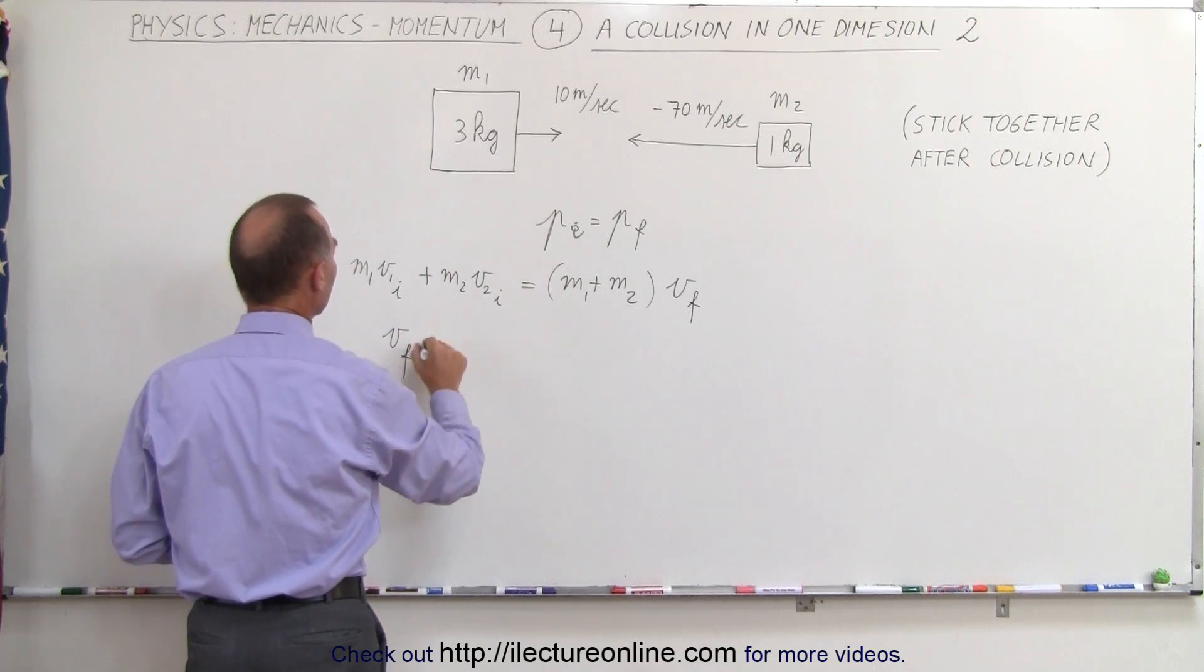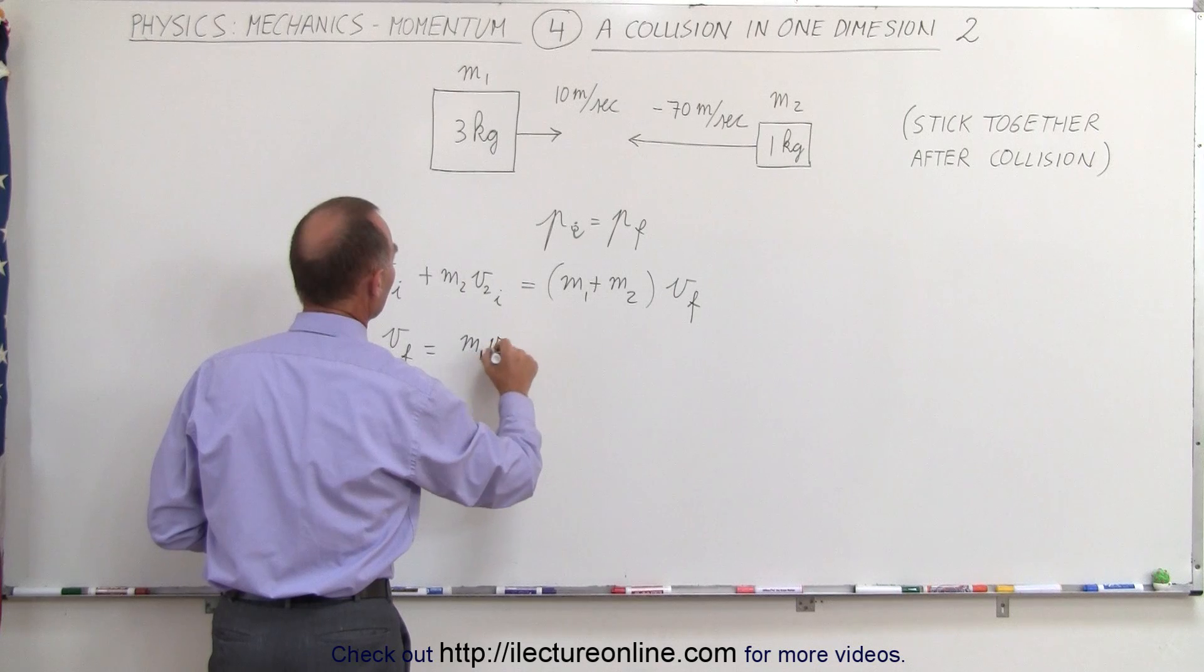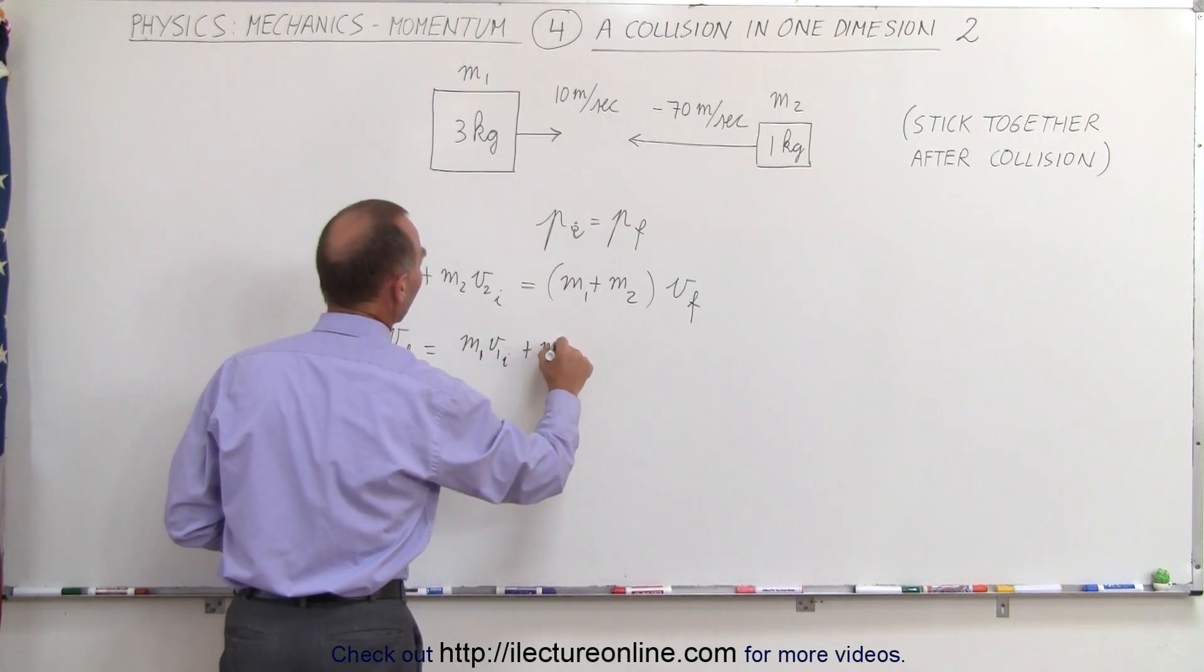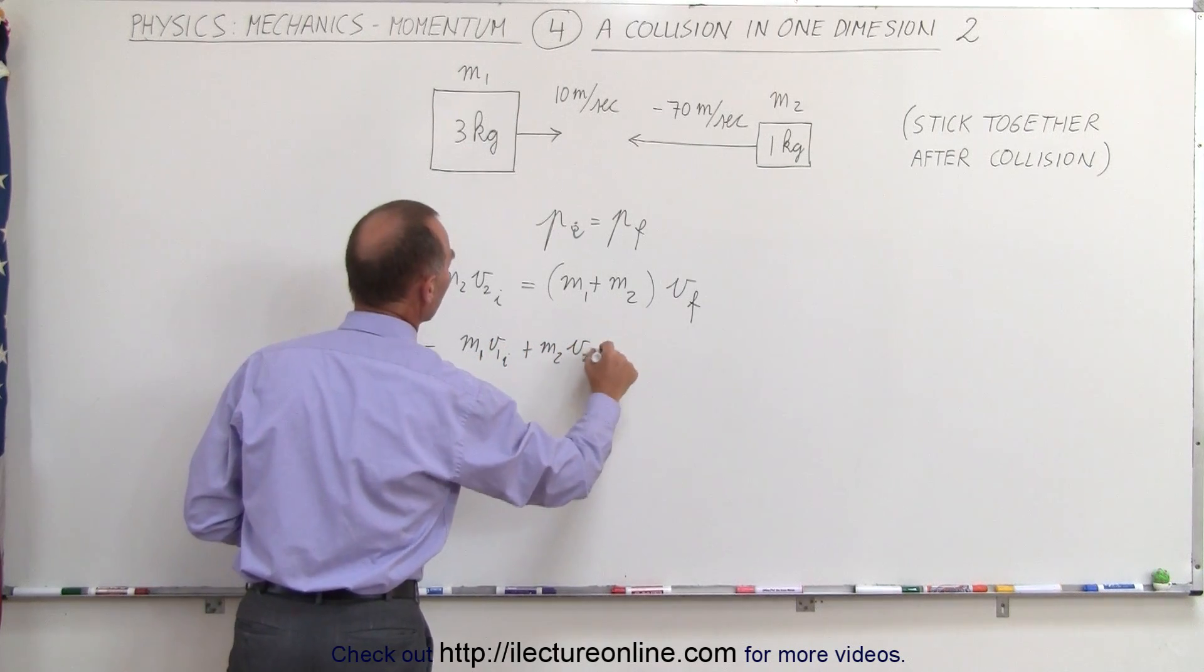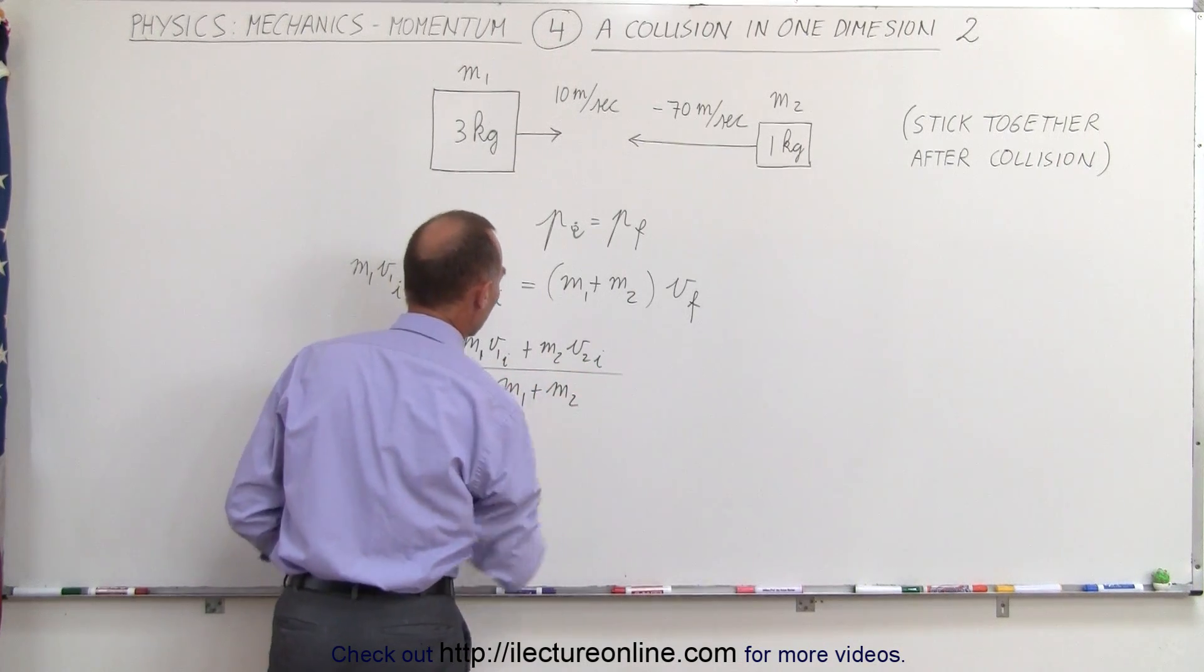We can say that V final is equal to the left side which is M1 V1 initial plus M2 V2 initial all divided by the sum M1 plus M2.